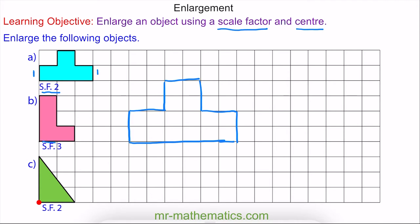The base which has a length of 2 on the object has a length of 6 on the image. This length which is 1 on the object has a length of 3 on the image. Again this 1 is enlarged to a length of 3, and this length of 2 is enlarged to 6. And then 3 again. If I have done it correctly the final vertical length will have a length of 9, which it does. The original has a length of 3.